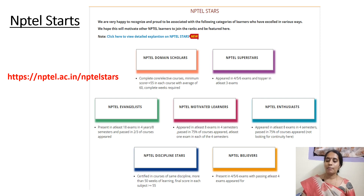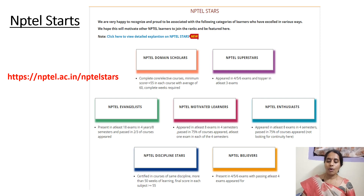Coming to the next category, NPTEL Believers. This is similar to NPTEL Superstars. The student should write either 4, 5, or 6 exams, but here the student has to pass at least 4 exams. If they appeared for 5 exams, they should pass at least 4. If they appeared for 4 exams, they must compulsorily pass all 4. Then only they will get the NPTEL Believers certificate, and this is all within one semester.